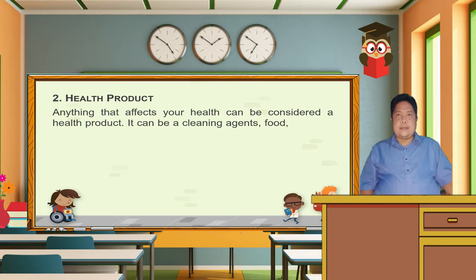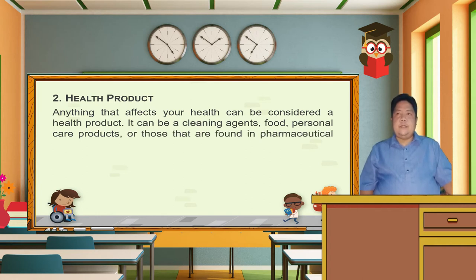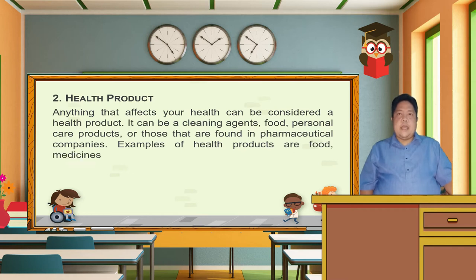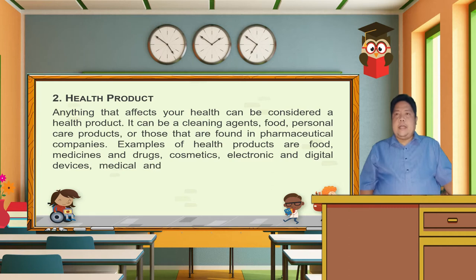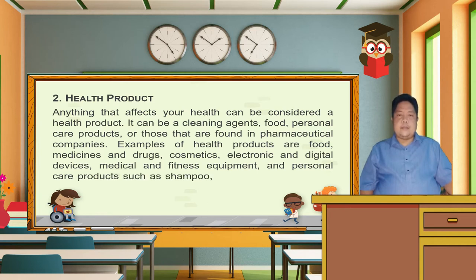Number two: health product. Anything that affects your health can be considered a health product. It can be cleaning agents, food, personal care products, and those found in pharmaceutical companies. Examples of health products are food, medicines and drugs, cosmetics, electronic and digital devices, medical and fitness equipment, and personal care products such as shampoo, soap, toothpaste, and lotion.